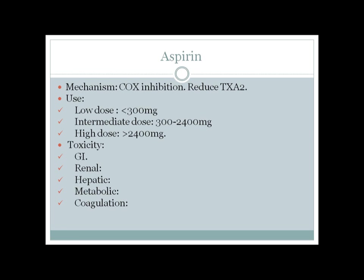The first and most important NSAID is aspirin, which inhibits both COX-1 and COX-2. Uniquely, aspirin inhibits COX irreversibly. Aspirin also reduces thromboxane A2, thereby preventing thrombosis. The most common dose is low-dose aspirin at 75 mg daily — also called baby aspirin — used for diseases associated with thrombus such as coronary artery disease or ischemic cerebrovascular disease.